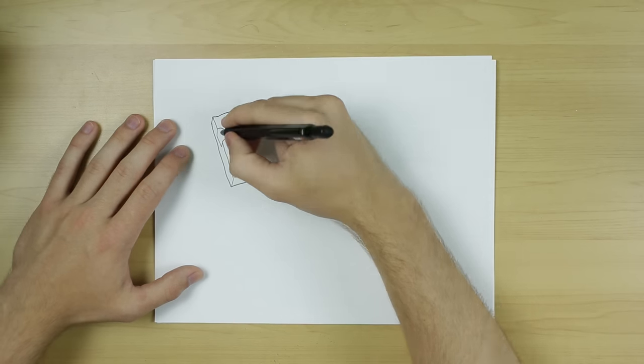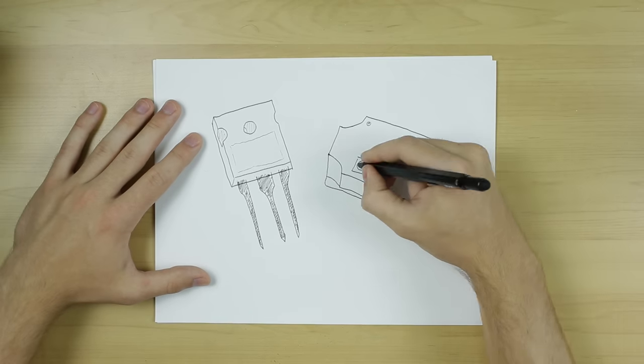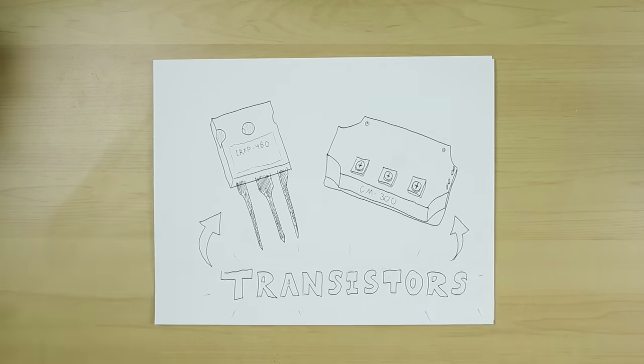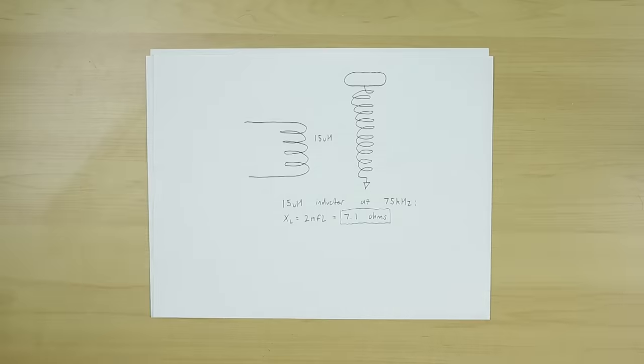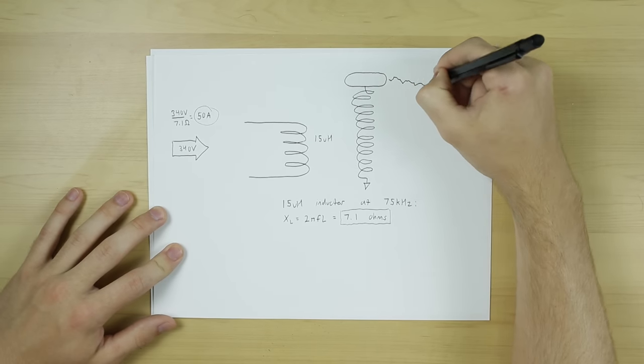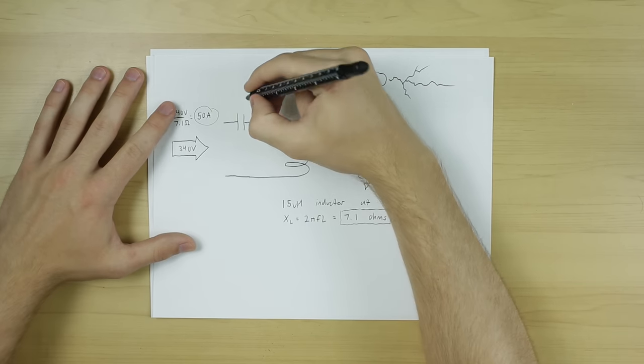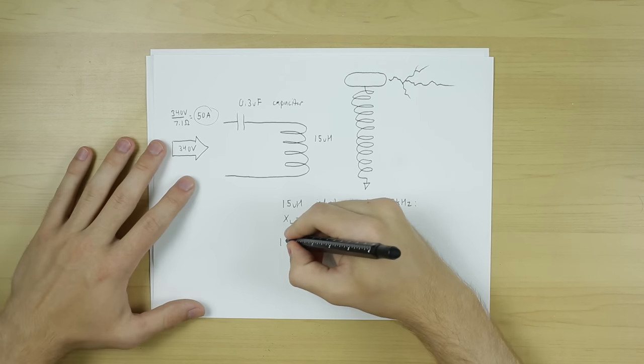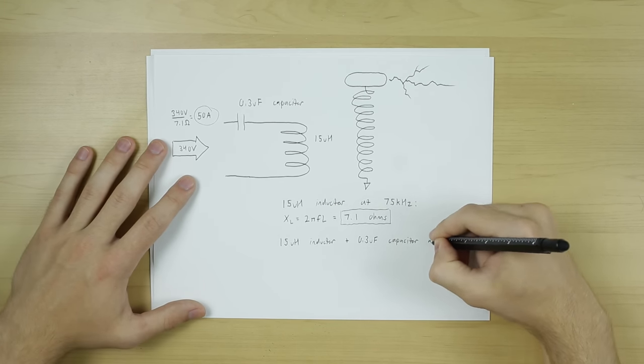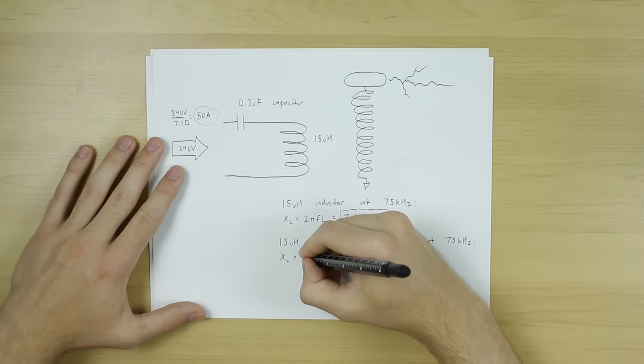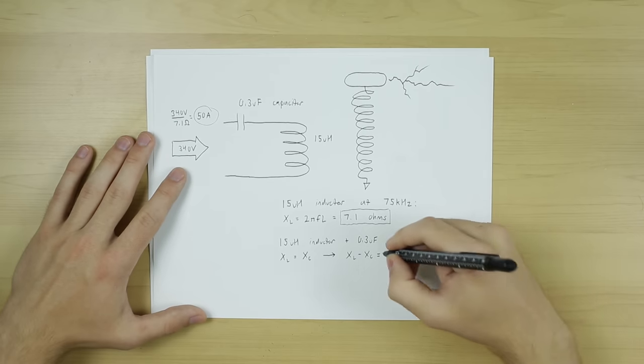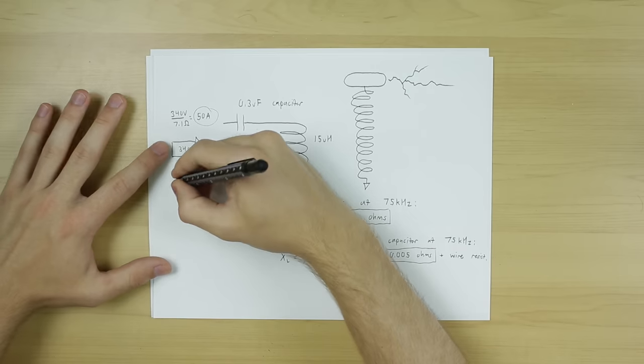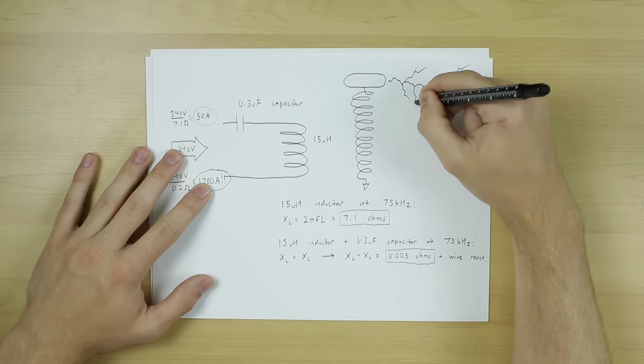Now, like all solid state Tesla coils, DRSSTCs use transistor bridges to perform their primary power switching. In that sense, they aren't very unique. What sets them apart is how they do it. You see, in a standard SSTC, the primary coil acts like any other inductor and impedes the flow of alternating current, which tends to limit the coil's performance. The DRSSTC gets around this by having a capacitor placed in series with the primary coil, which effectively forms a series LC resonator. If the frequency applied by the transistor bridge matches the resonant frequency of this resonator, the inductive impedance drops to zero, and the only thing left to restrict current flow is the resistance of the wire itself. This, in turn, allows for much higher primary currents, and therefore a much greater output.